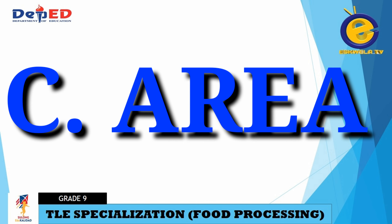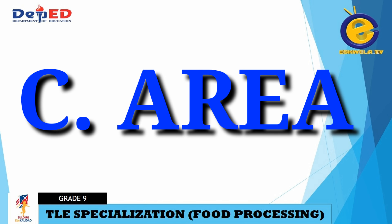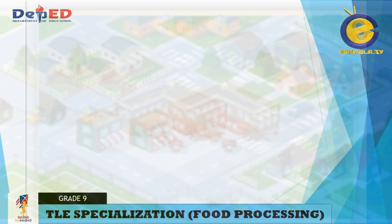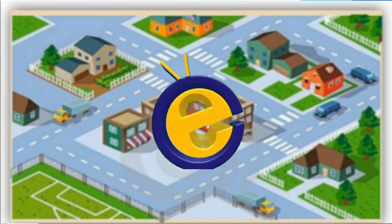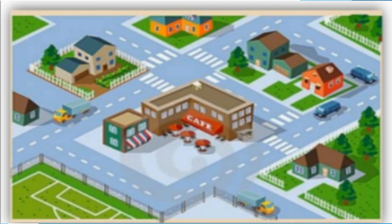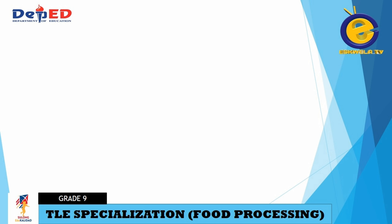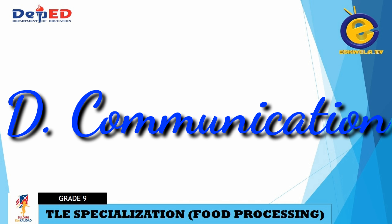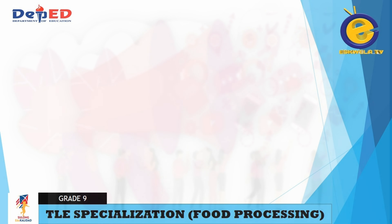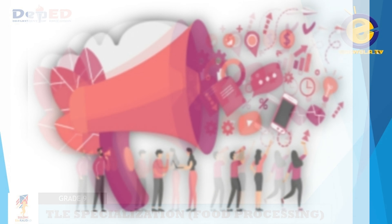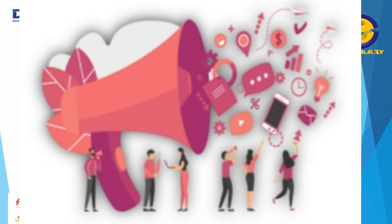The third key concept of market is area. There should be an area in which buyers and sellers of the commodity live in. It is essential that the buyers and sellers come to a particular place to transact business. The fourth key concept of market is communication. There should be close contact and communication between buyers and sellers, and this communication may be established by any method.